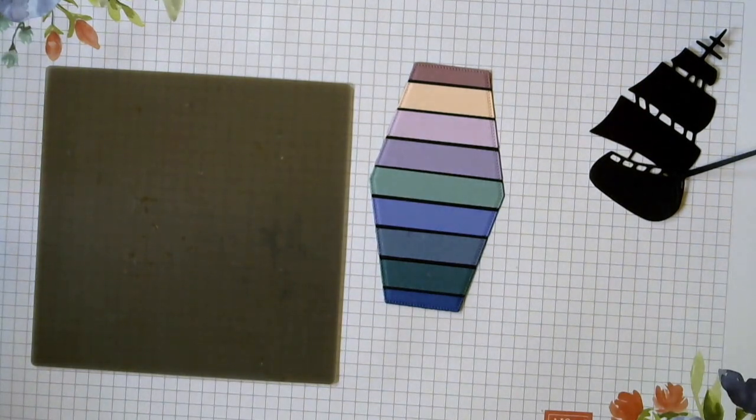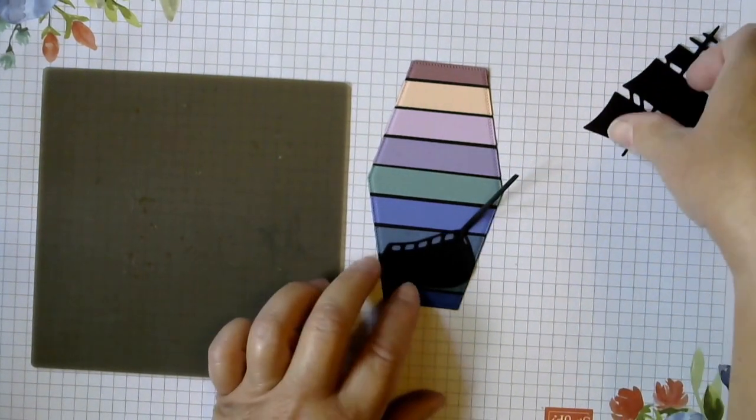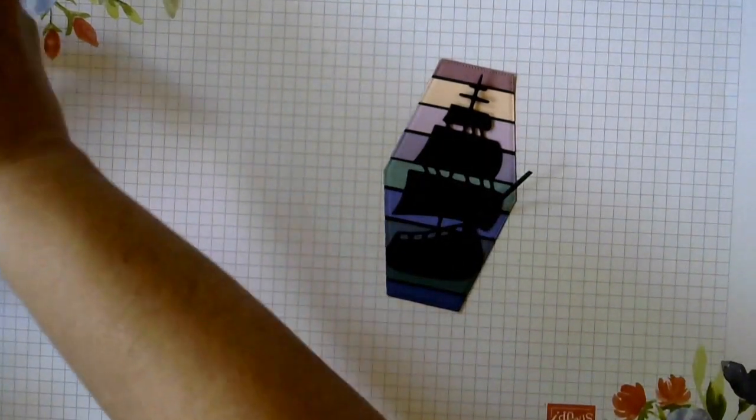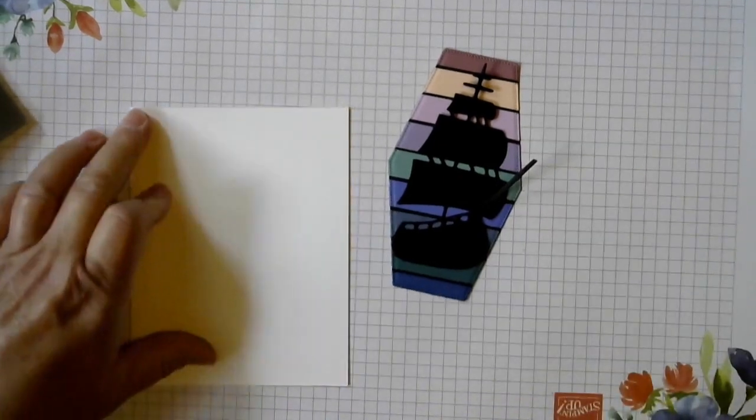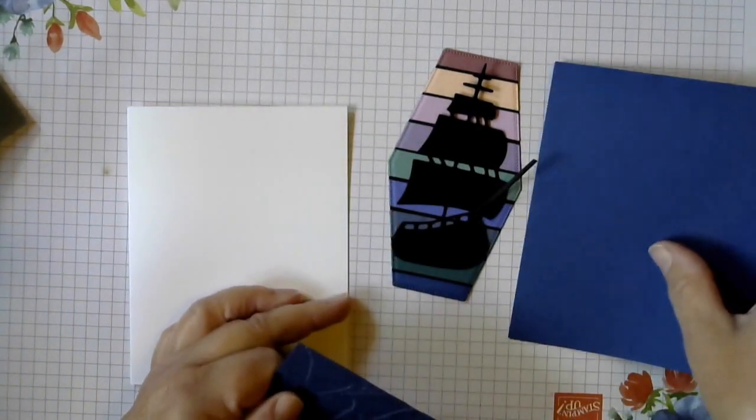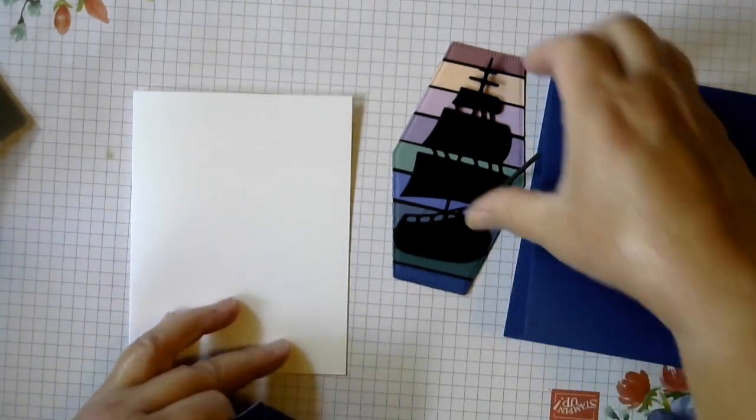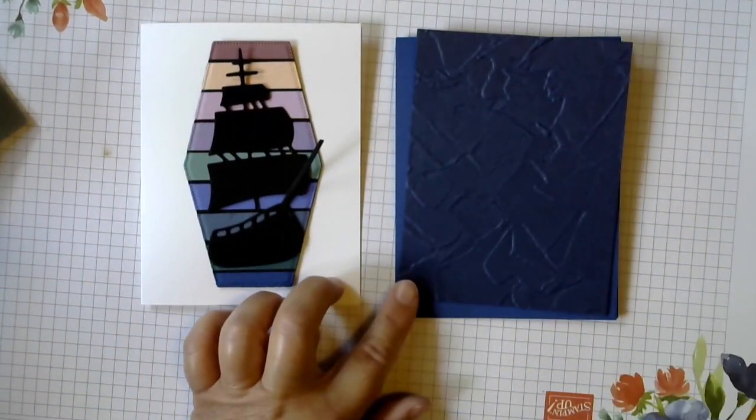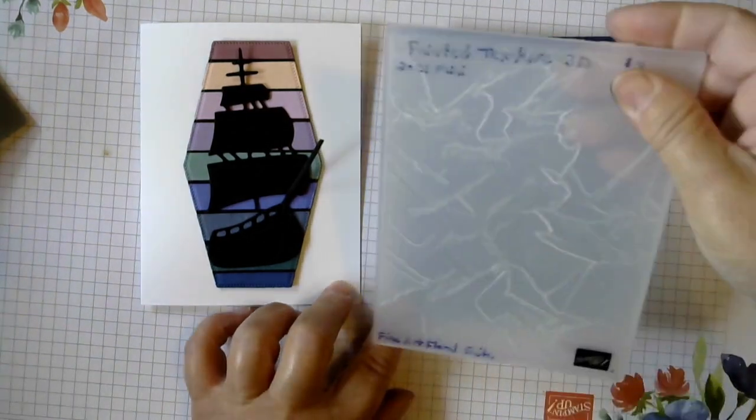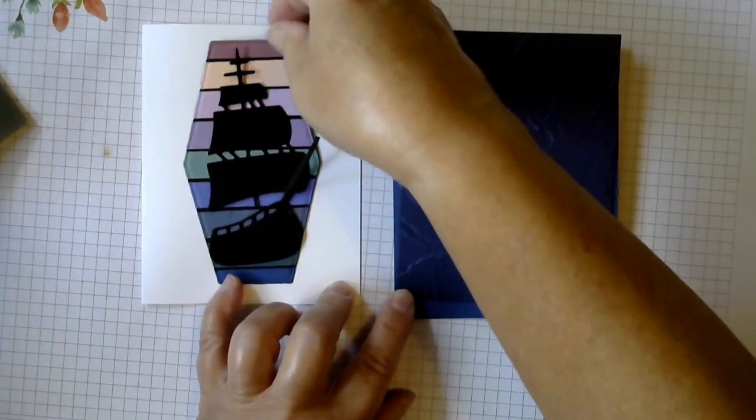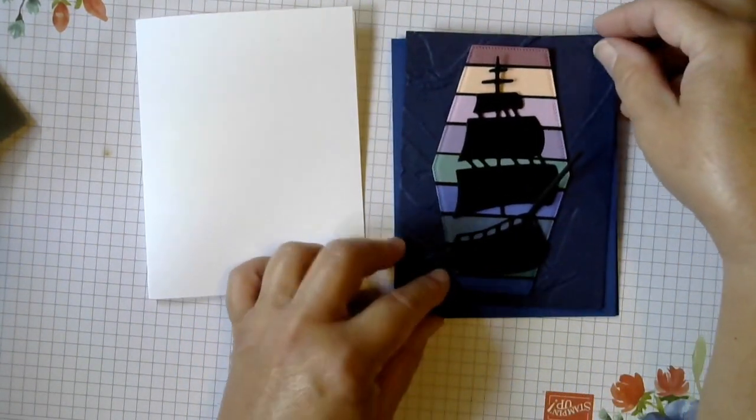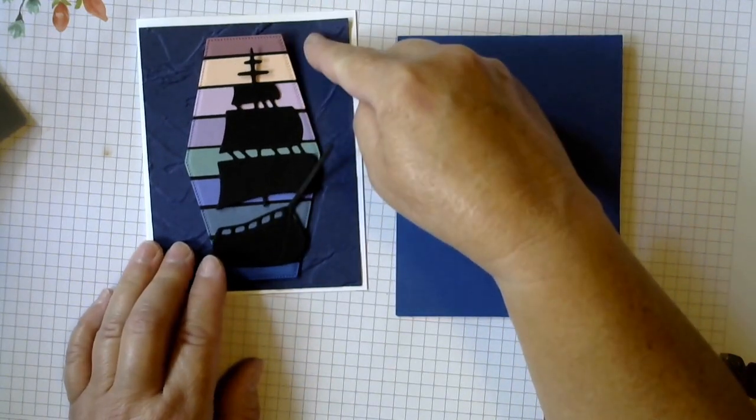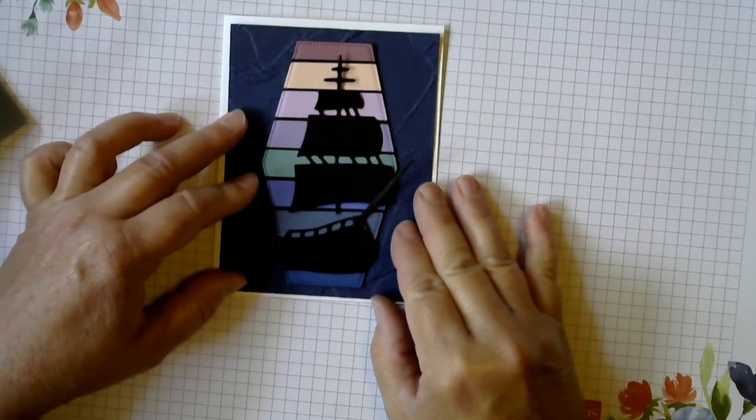So here we have our die cut piece that our ship is going to sit on. I won't glue it together just yet because we don't know, I might want it up, down, who knows. I have pulled in two different card bases because I'm not sure which one I want to use yet. I've got the Blueberry Bushel and a piece of Basic White. I also have a piece of Night of Navy that has been embossed with Painted Textures 3D embossing folder which could give it kind of a dark and stormy look. Actually I think I like that on the white. So we'll go with the white and now we just have to adhere everything together.